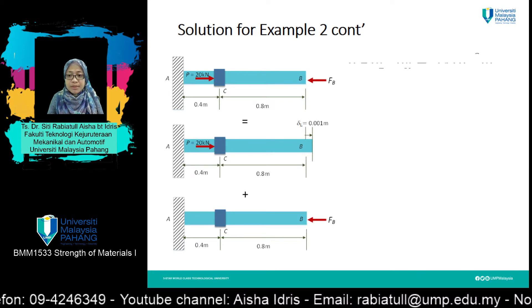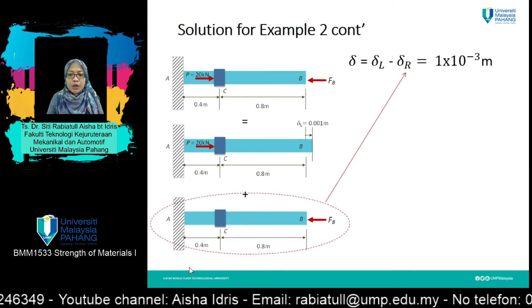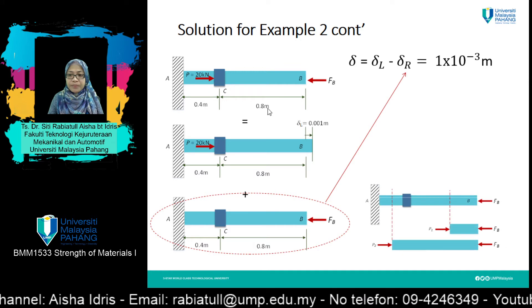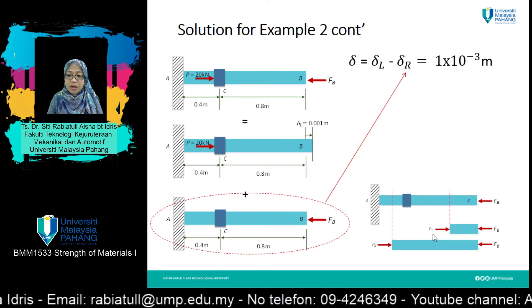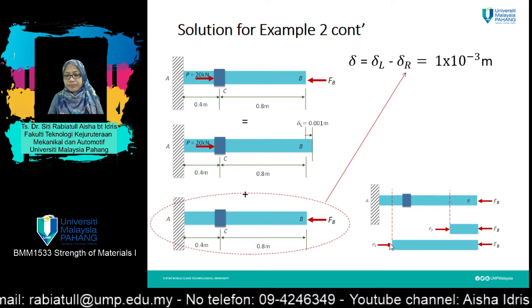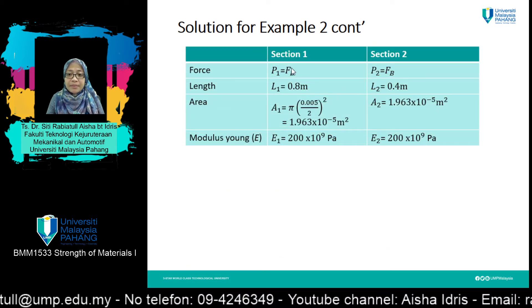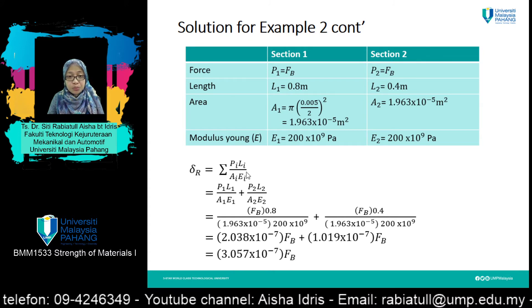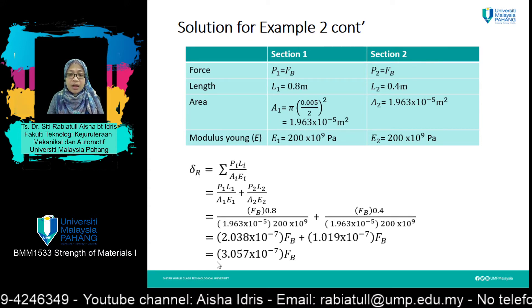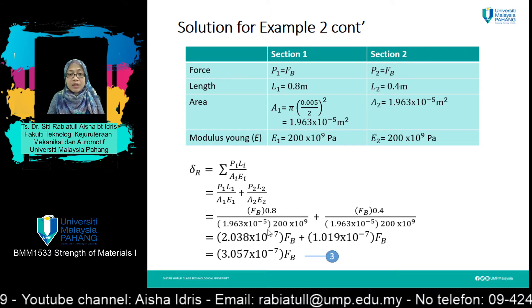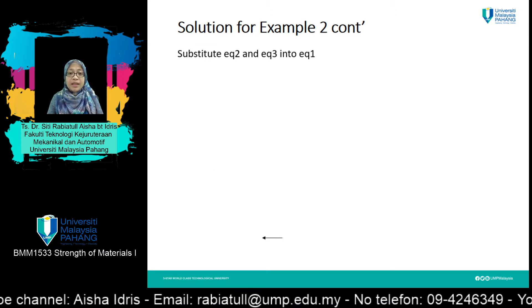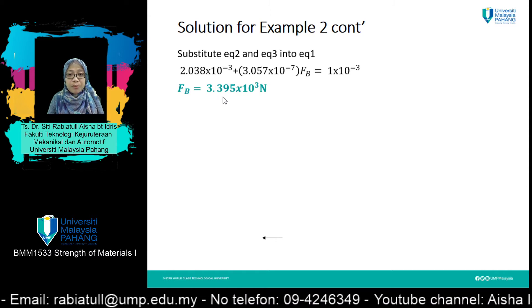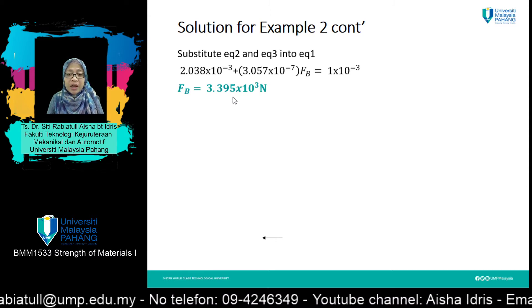Next, cut the sections to find the value of delta due to the redundant load. Following the same steps, find P1 and P2, substitute into the table, and apply the formula. This gives equation 3. Substituting equations 2 and 3 into equation 1, you will get the value of F_B equal to 3.395 kilonewton.